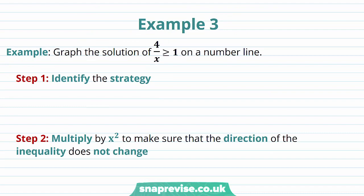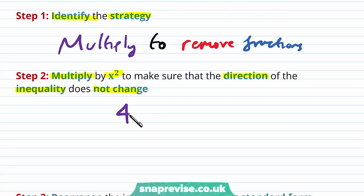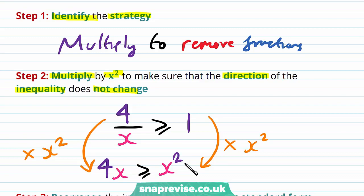Our last example asks us to graph the solution of 4/x ≥ 1 on a number line. Our strategy is to multiply to remove fractions. We multiply both sides by x² (which is always positive) to avoid changing the inequality direction — just multiplying by x could give a positive or negative. This gives 4x ≥ x², and we do not change the direction of the inequality since x² is positive.